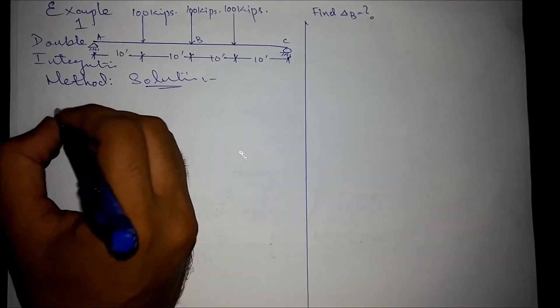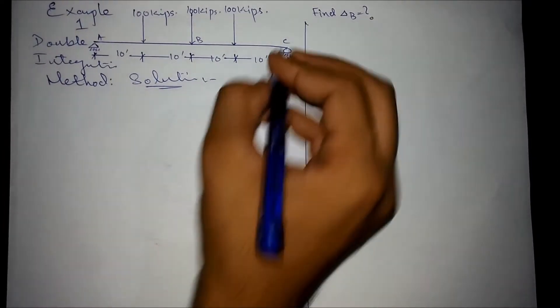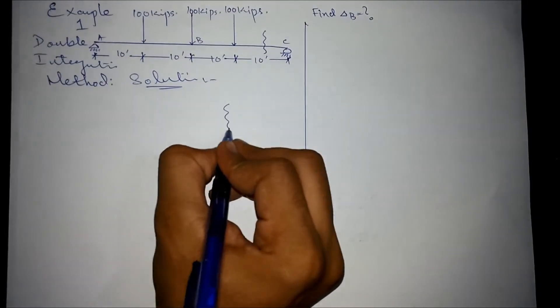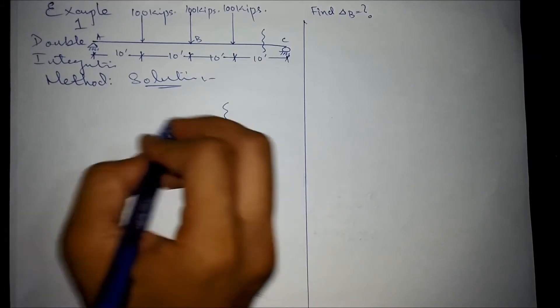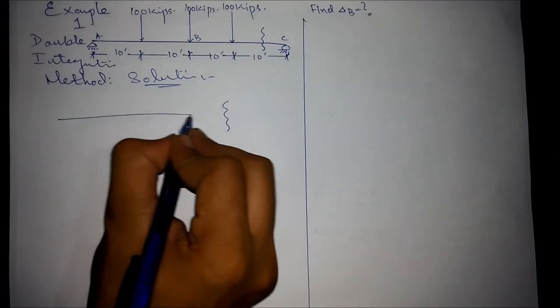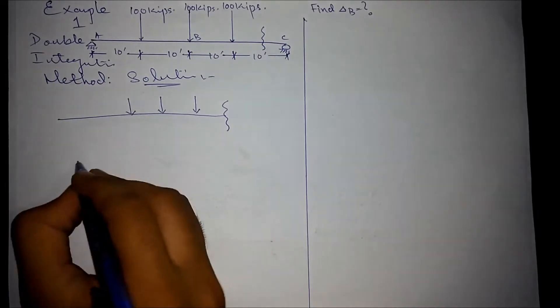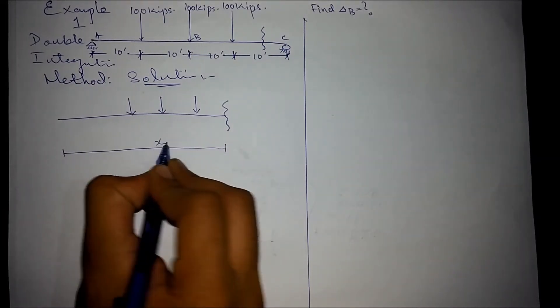The generalized moment equation would be like, for cutting the last section here, the free body diagram of the structure would be, let's consider this distance as x.